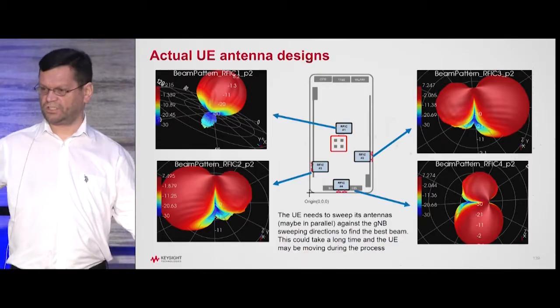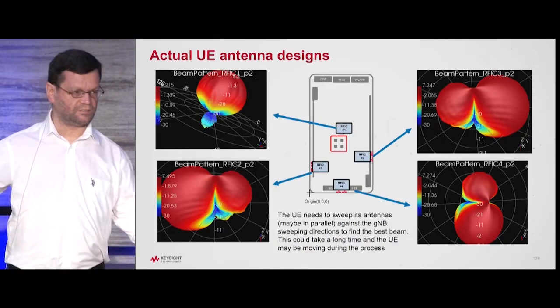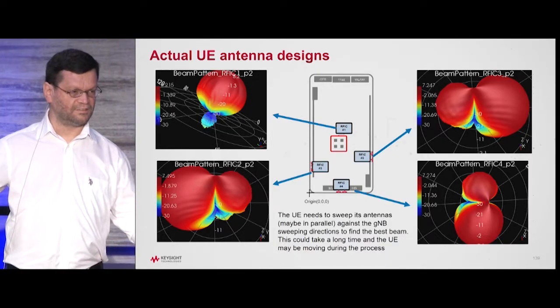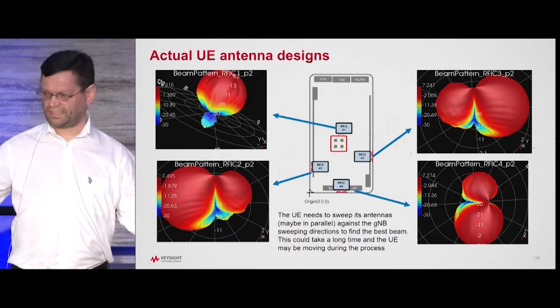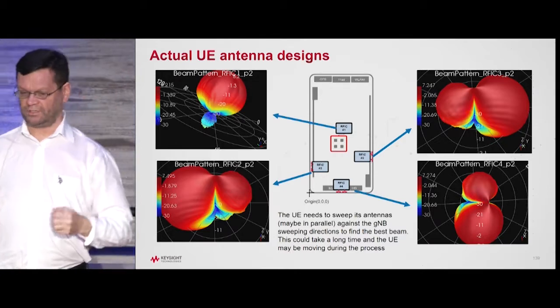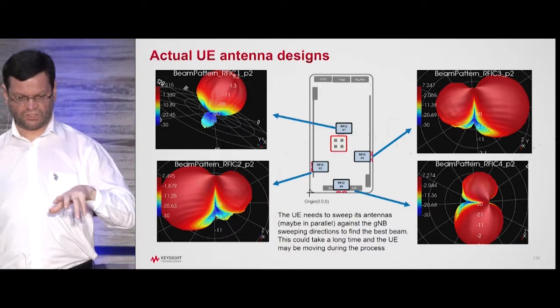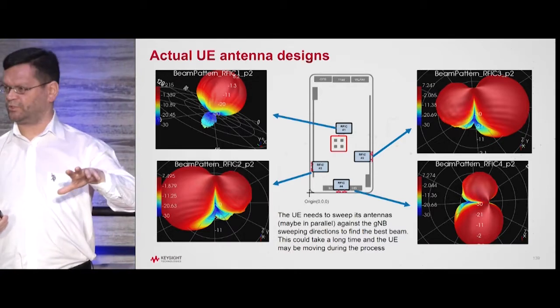The mobile would then need to switch its antenna while the base station is switching its antenna, and that's quite a complicated thing. There may be as many as 16 different states we could have here.